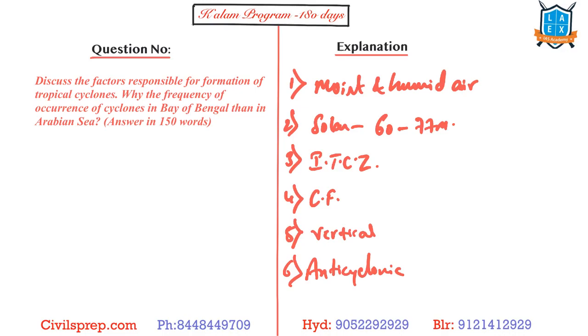And then you need to talk about the frequency of occurrence of cyclones in Bay of Bengal. The very first important thing is it's not ITCZ, it's not Coriolis force, it's not these which actually determine. It's more about the moist and humid air where you require 23 to 27 degrees Celsius to form these cyclones. This particular phenomenon is more in Bay of Bengal compared to Arabian Sea mainly because of two important reasons.